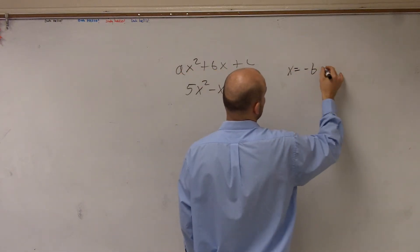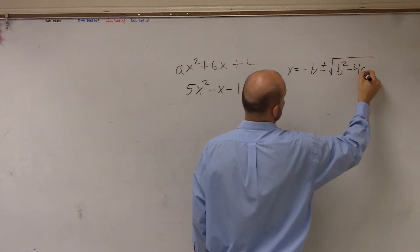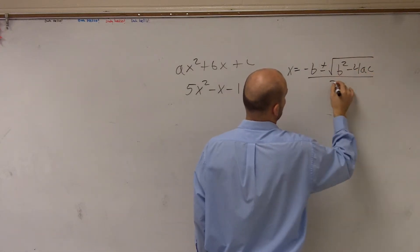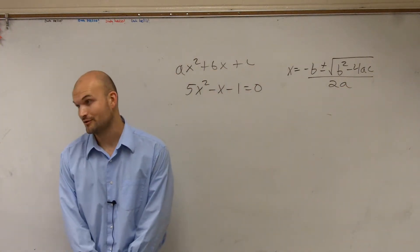x equals opposite of b plus or minus the square root of b squared minus 4 times a times c all over 2 times a. That is what we call our quadratic formula.